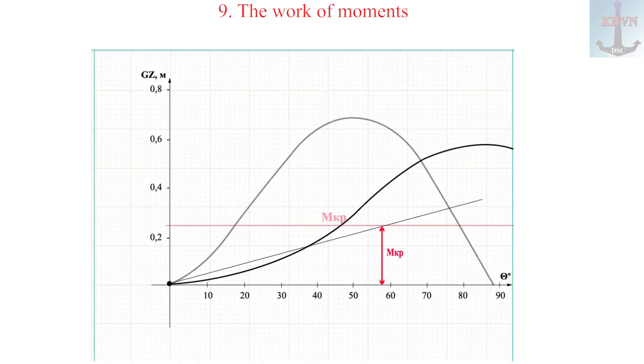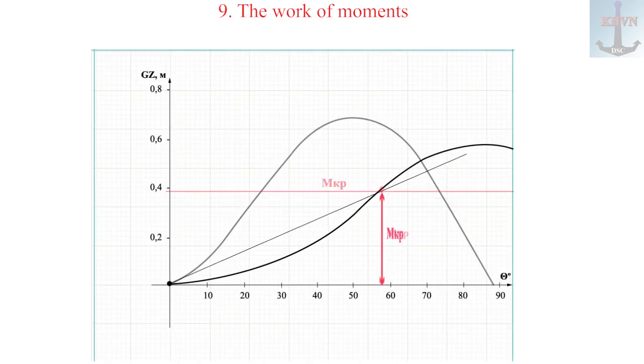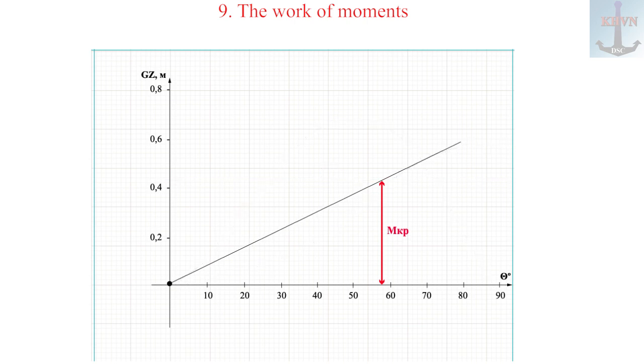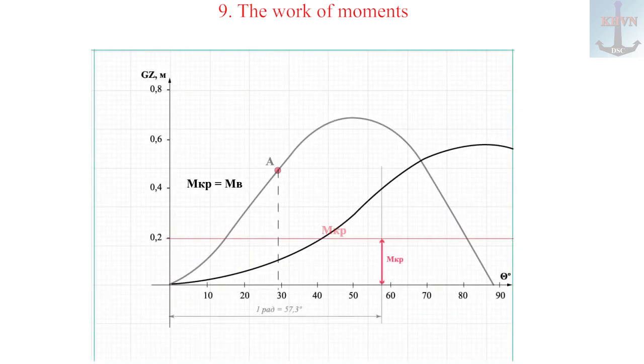To begin with, I will demonstrate the work graph of the overturning moment. This is an inclined straight line with a slope equal to the healing moment or its shoulder. When working with DSD, you can't do without additional constructions. One: a line segment of one radian is plotted on the X-axis.